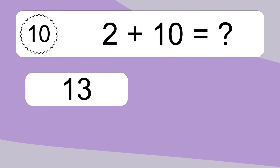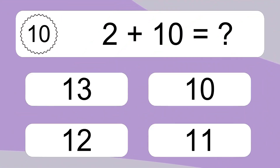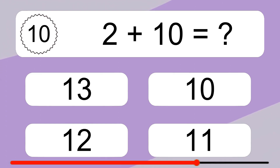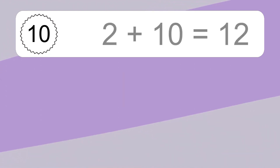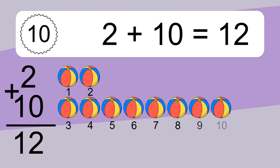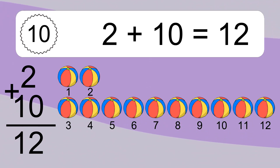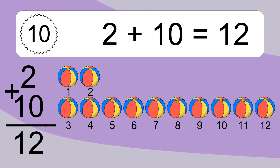Two plus ten equals what? Let's count it: one, two, three, four, five, six, seven, eight, nine, ten, eleven, twelve.